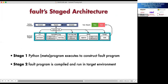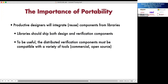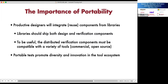Fault uses an architecture where execution is performed in two stages. In the first stage, a Python program is executed to construct a Fault program. In the second stage, the Fault program is compiled and run in a target environment. Fault supports a wide variety of back-end target languages and runtimes ranging from open source and commercial simulators to a formal model checker. Fault's staged architecture is designed for portability. Productive designers integrate components from libraries, which should ship with both design and verification components. These distributed verification components must be compatible with a wide variety of tools.